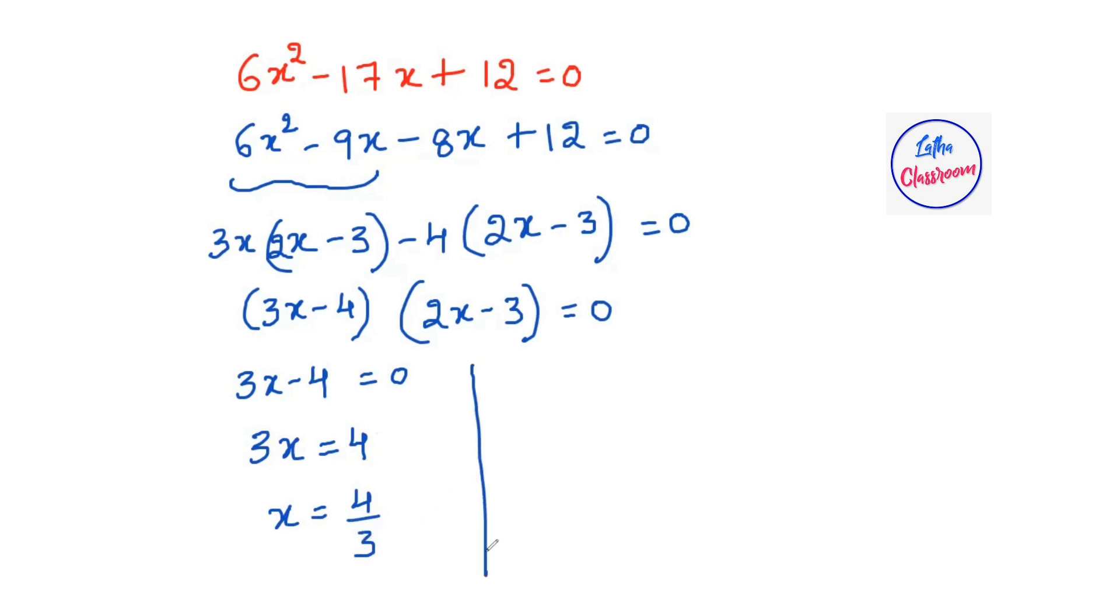Next, 2x - 3 = 0. So 2x = 3, and x = 3/2.